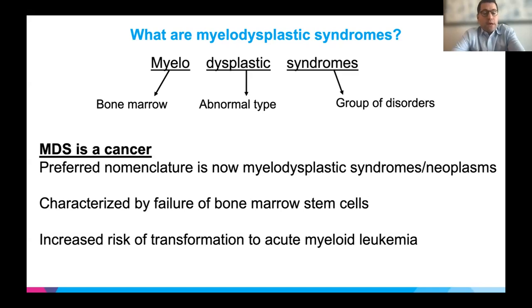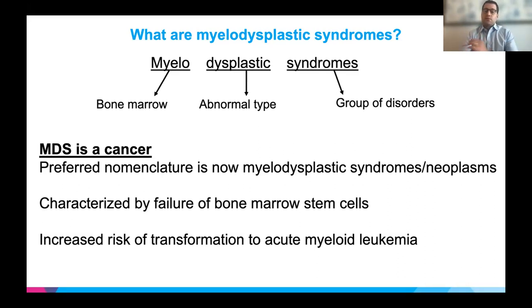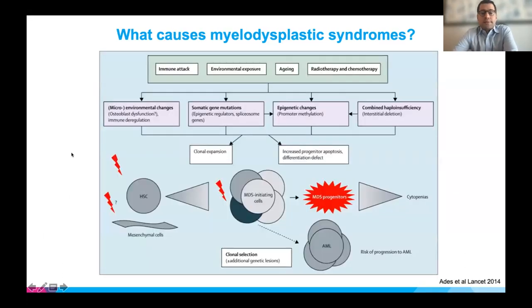MDS is characterized by failure of maturation of bone marrow stem cells — the inability of these stem cells to create normal red blood cells, normal white blood cells, or normal platelets. There's also an increased risk of transformation, where the disease can turn from MDS into acute myeloid leukemia. What causes MDS? It's complicated.